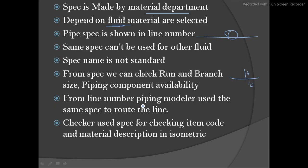From the line number, the piping modeler uses the same spec to route the line. If you have a line number, the spec is shown in it. The modeler selects the spec matching the line number and routes the line accordingly. The checker uses the spec for checking the item code and material description in the isometric. In the isometric you have a bill of material with pipe component descriptions and item codes, and the checker uses the specification to verify them.